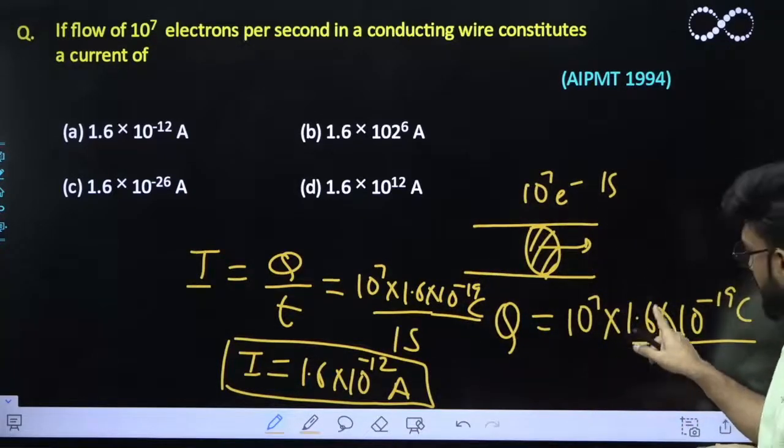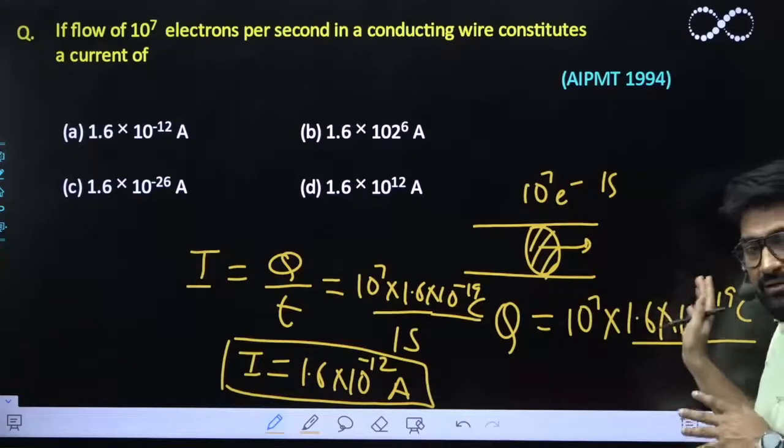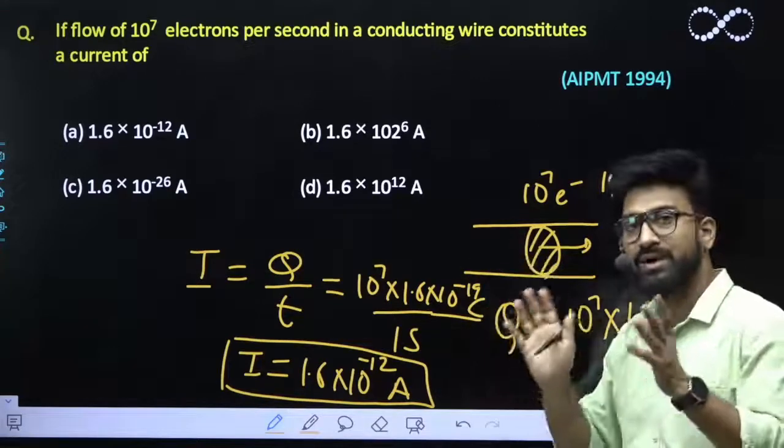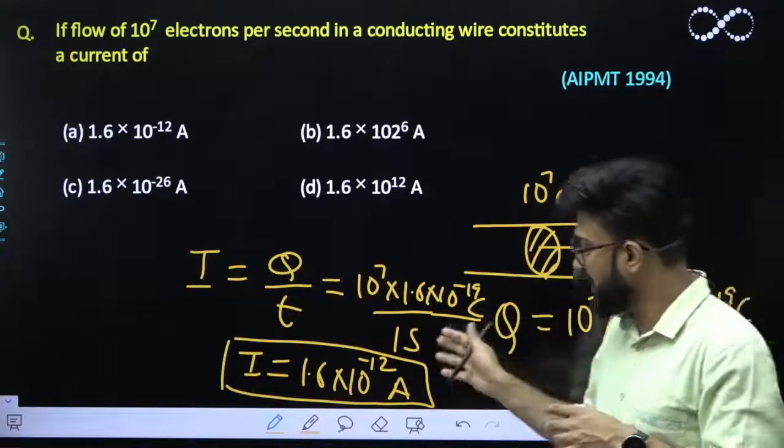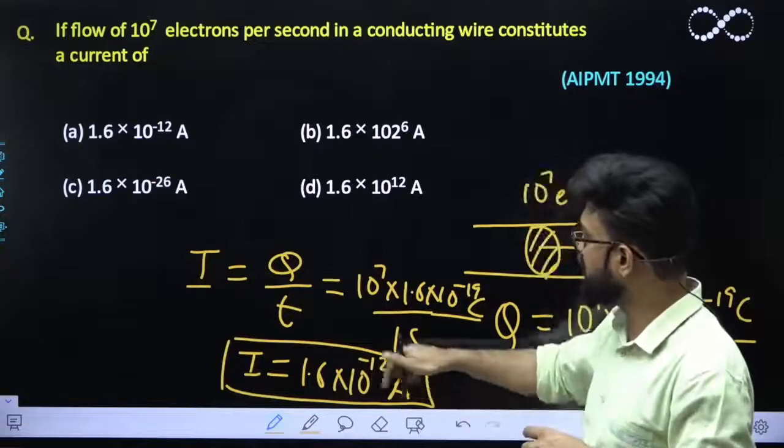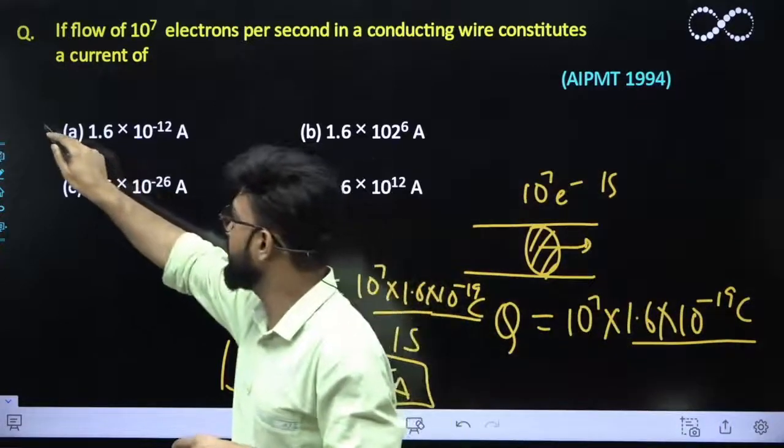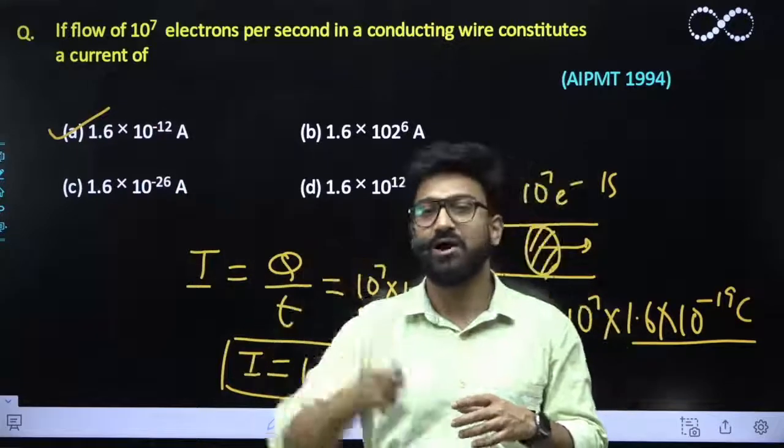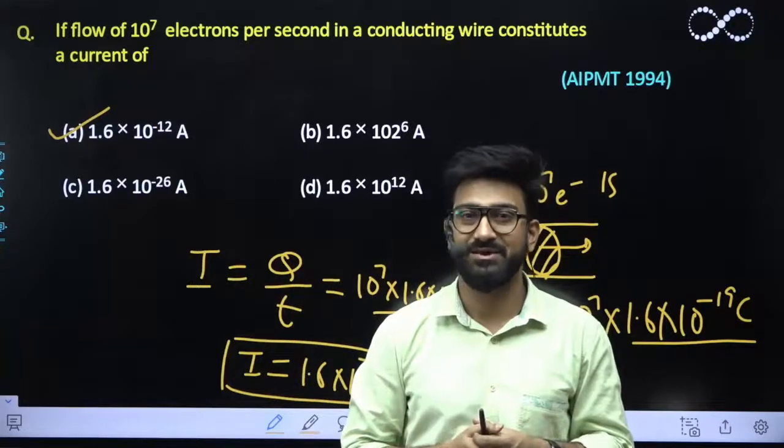Rest, this question was quite easier to solve, and your answer, the correct answer would be 1.6 into 10 raise to power minus 12, which is your first option that you should get. I hope this question is clear to everyone. Thank you.